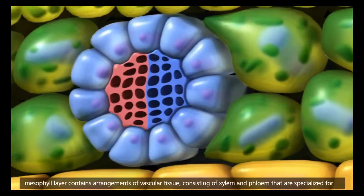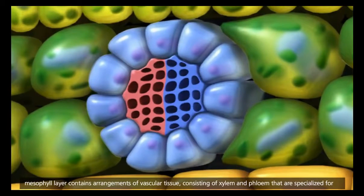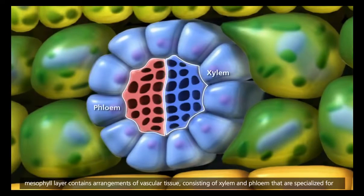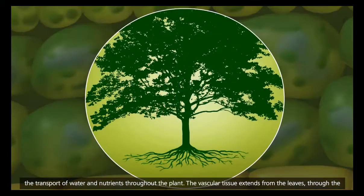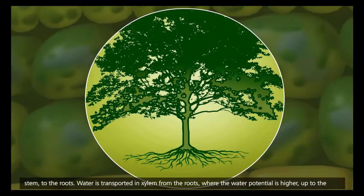The spongy mesophyll layer contains arrangements of vascular tissue, consisting of xylem and phloem, that are specialized for the transport of water and nutrients throughout the plant. The vascular tissue extends from the leaves, through the stem, to the roots.